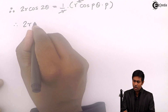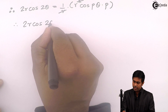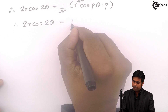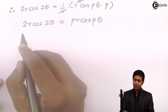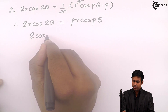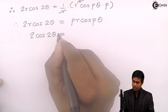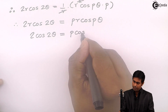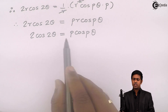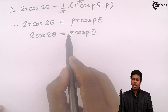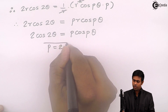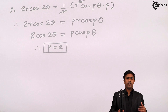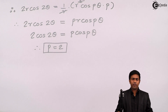Therefore, 2r cos 2 theta equals p r cos p theta. Cancelling r from both sides gives 2 cos 2 theta equals p cos p theta. If these two terms are the same, then p must equal 2. So we got the value of p equals 2 when f of z is given as an analytic function. Thank you.